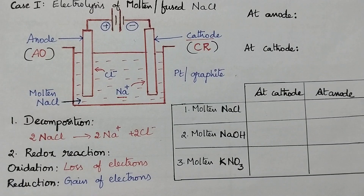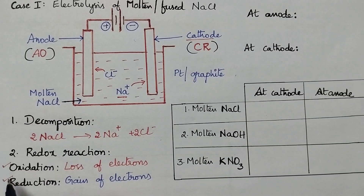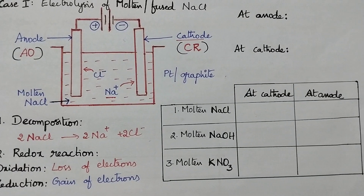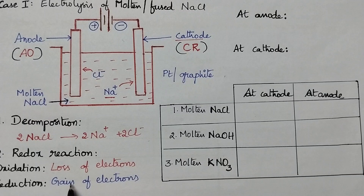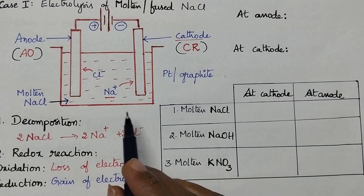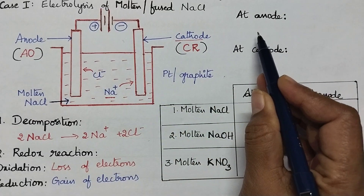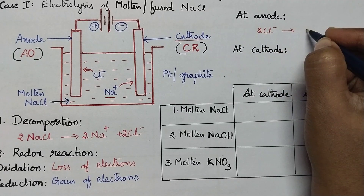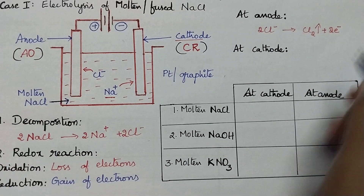What is meant by a redox reaction? Redox reaction means it involves both oxidation and reduction. Oxidation means loss of electrons whereas reduction means gain of electrons. So here in this case at the anode, the Cl⁻ ions undergo oxidation which results in the liberation of chlorine gas with the loss of two electrons.